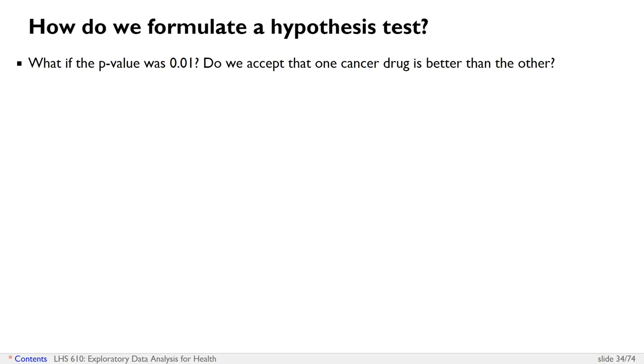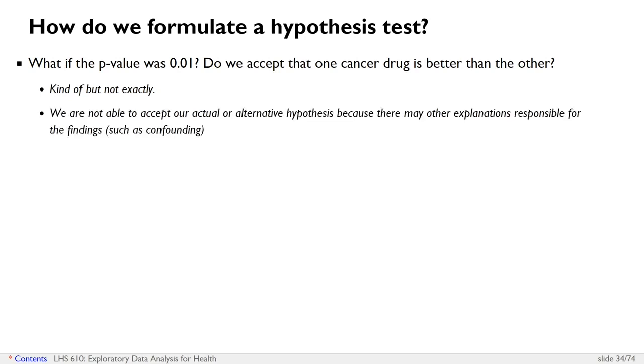So what if the p-value was 0.01? Do we accept that one cancer drug is better than the other? Kind of, but not exactly. So we're not able to accept our actual or alternative hypothesis because there may be other explanations for the findings such as confounding.